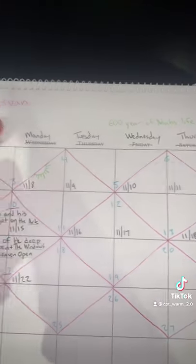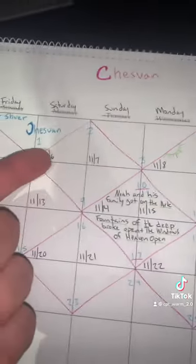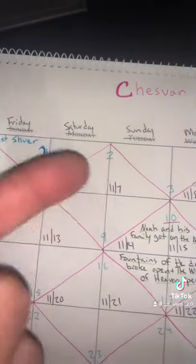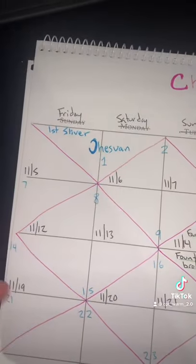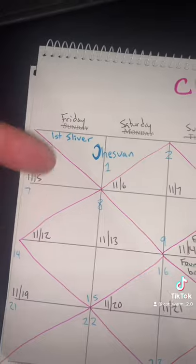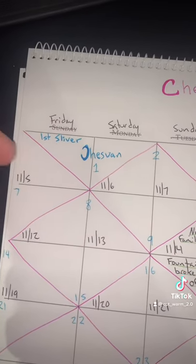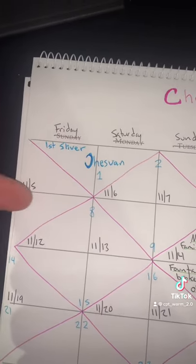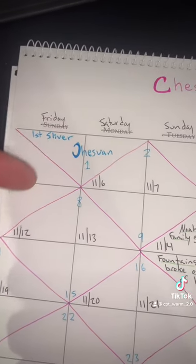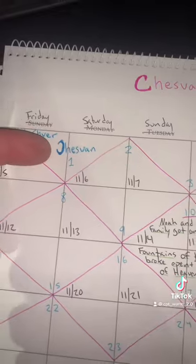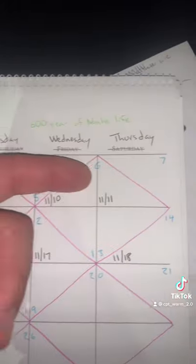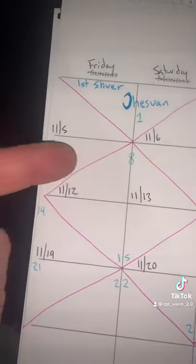So one thing I said was that Lunar Sabbath will be Friday, Saturday. But according to when we saw the first sliver — which was the evening after, on November 5th after sunset, we saw the first sliver — so that would have been Heshvan 1. So that puts the Lunar Sabbath to Thursday, Friday.